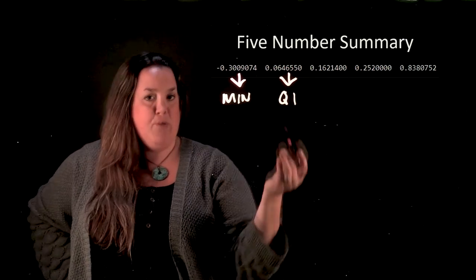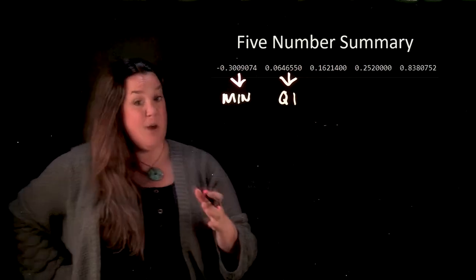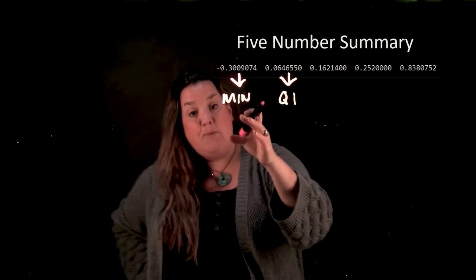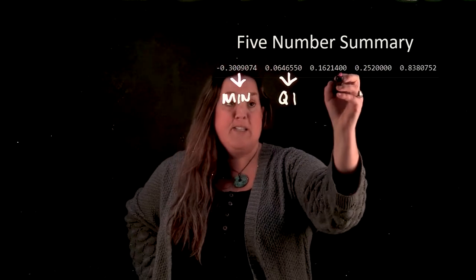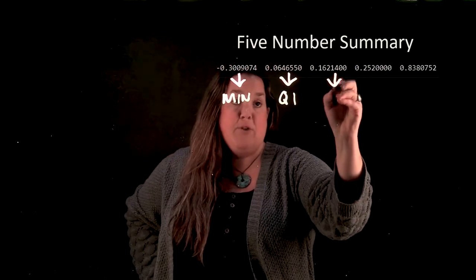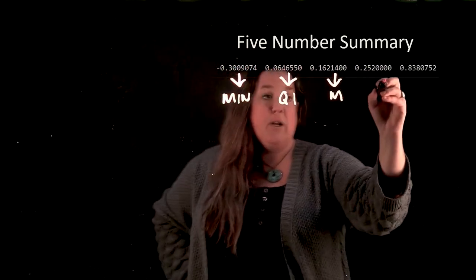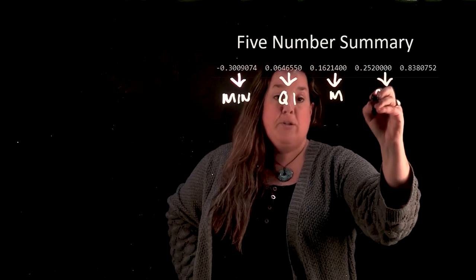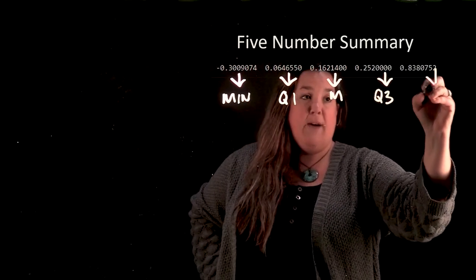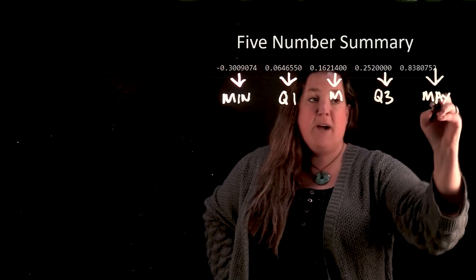So we know that these numbers are in order. So that means I also know that the minimum is going to be the smallest value. Q1 is the next number. The next number after that, remember is the median. The number after that is going to be Q3. And the final number after that is going to be the maximum.